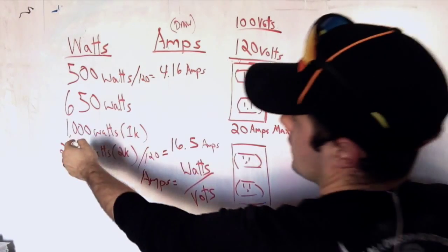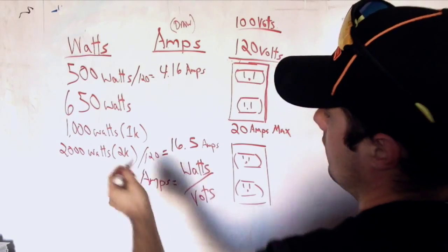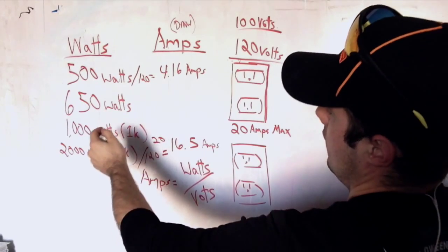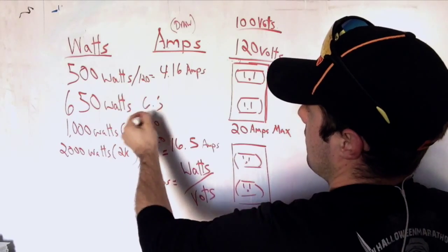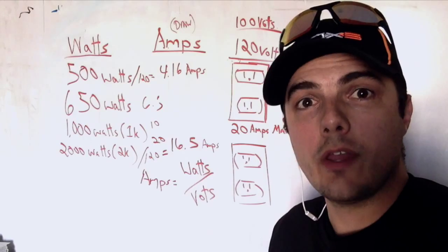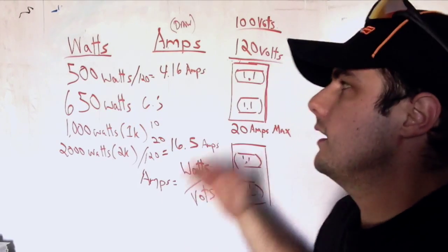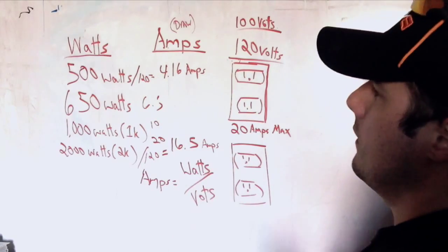So all of a sudden our 2000 watt turns into 20 amps. Our 1K turns into 10 amps, 650 turns to 6.5 amps, 500 watt turns into 5 amps. That's much easier math. So now we go okay, how many of these 500 watt lamps can I plug into a 20 amp circuit if I'm using 100 volts instead of 120? Well that means I can plug in four of them.